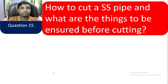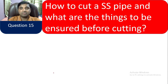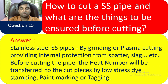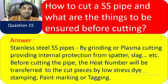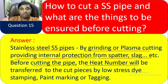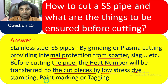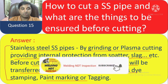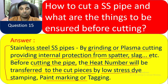Question 15: How do you cut a stainless steel (SS) pipe, and what things must be ensured before cutting? Cutting is done by grinding or plasma cutting, providing internal protection from spatter and slag before cutting. The heat number will be transferred to the cut pipe by low-stress die stamping, paint marking, or tagging. These requirements apply not only to SS pipe but also to carbon steel pipe.